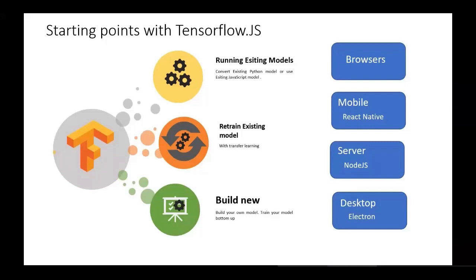The third approach is building your own model from scratch in the front end. We have a Keras API — Keras is a major player in the ML industry — which provides a layer-based API for building and training models. Training can happen in the browser or on the server using Node.js, which also falls within the JavaScript ecosystem.